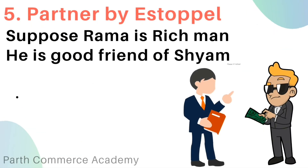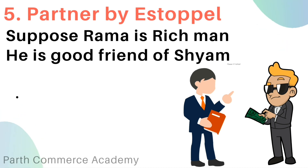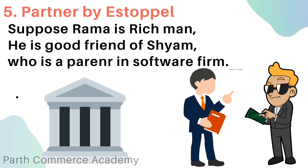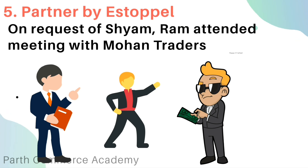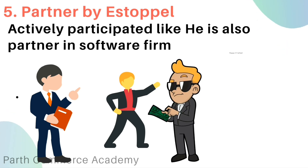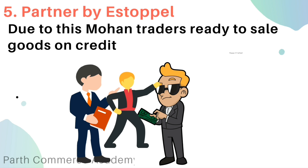Next is partner by estoppel. To understand this, consider an example: suppose Ram is a rich person and a good friend of Siam, who is a partner in a software firm. On Siam's request, Ram attended a meeting with Mohan Traders and actively participated, showing as if he is also a partner in the software firm. Due to this, Mohan Traders agreed to sell goods on credit.